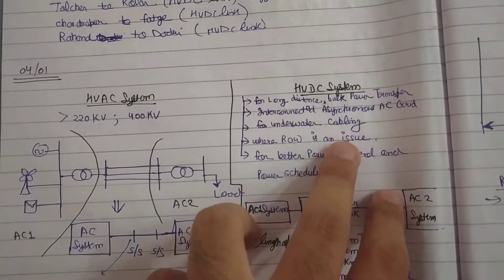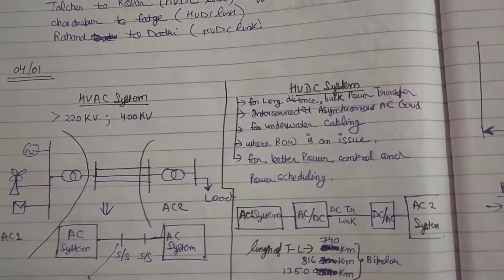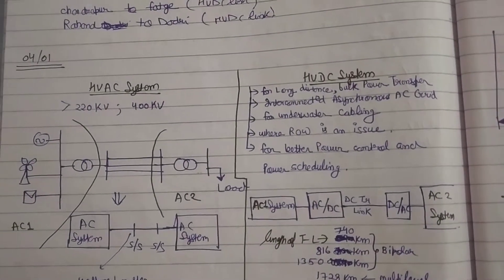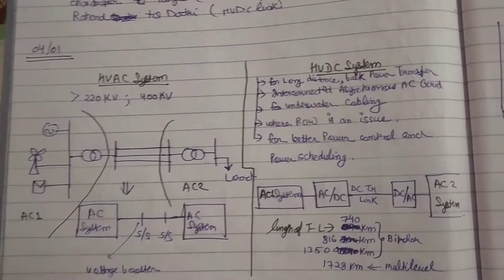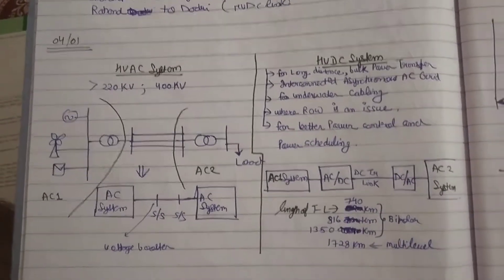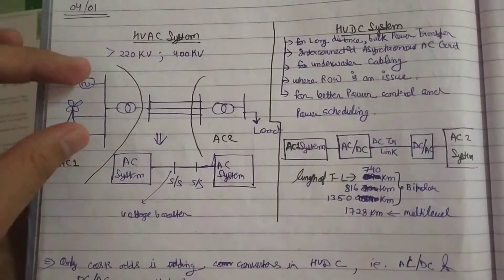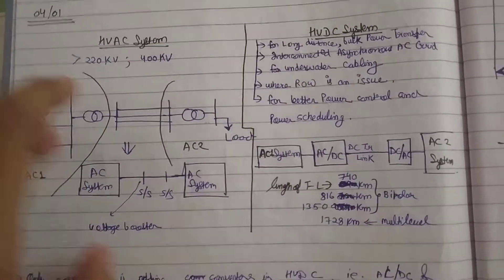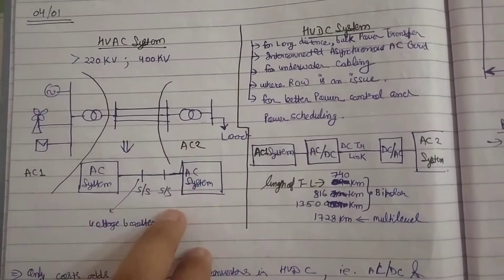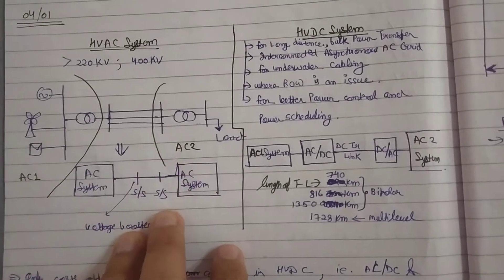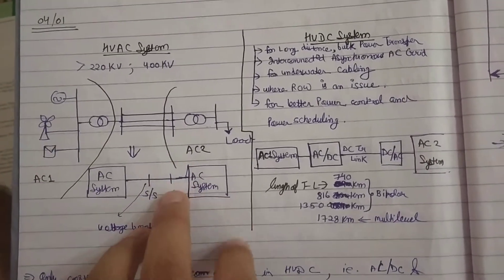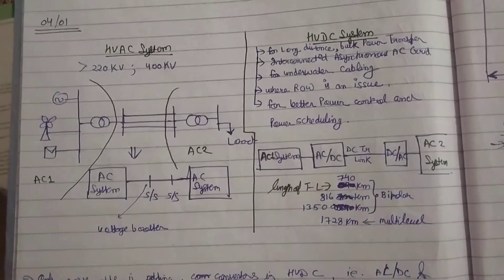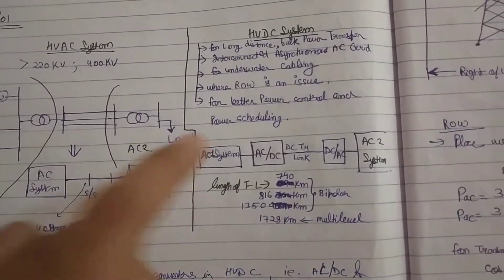Right of way is an issue where I have HVAC, so I can use HVDC. For better control and power scheduling, I can use HVDC.